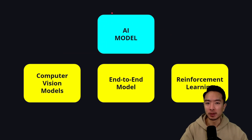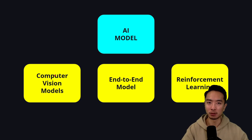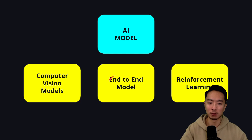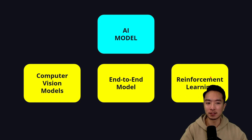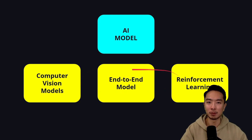For the AI model, there could be a lot of different types. The first one is computer vision models — things like YOLO, which allows a robot to identify different objects that it sees. We have end-to-end models, like Tesla's FSD, which is used to drive the car autonomously using only video data. We also have reinforcement learning — for example, having a robot in a gym learning how to walk. All of these types of AI models could be on a Physical AI system.